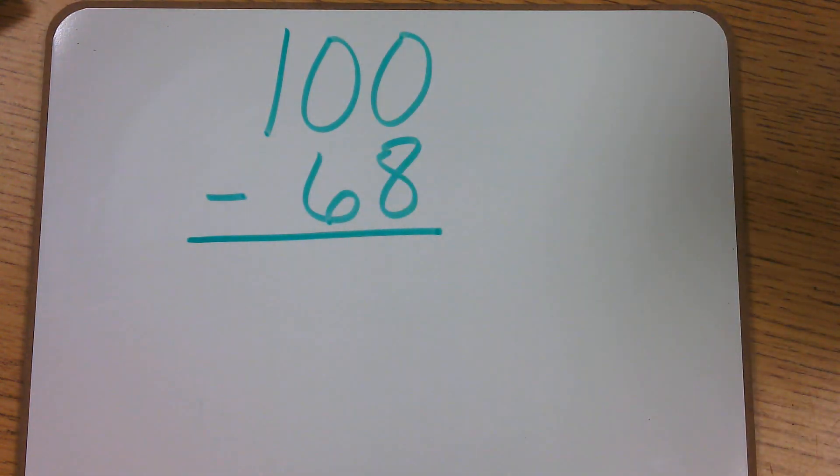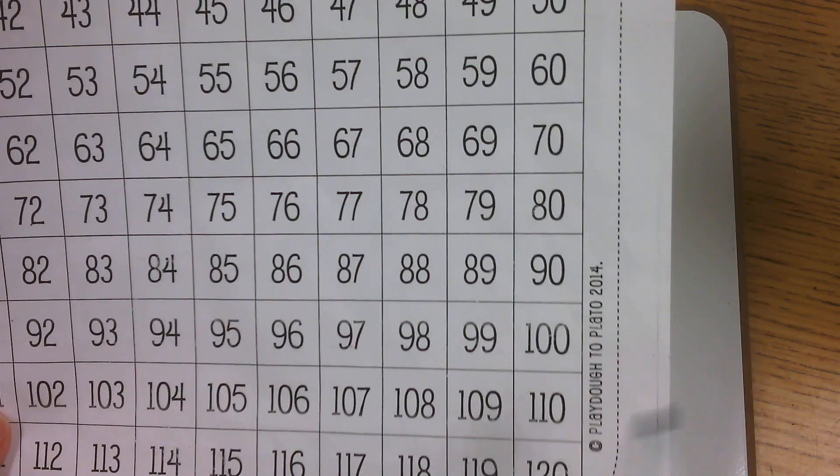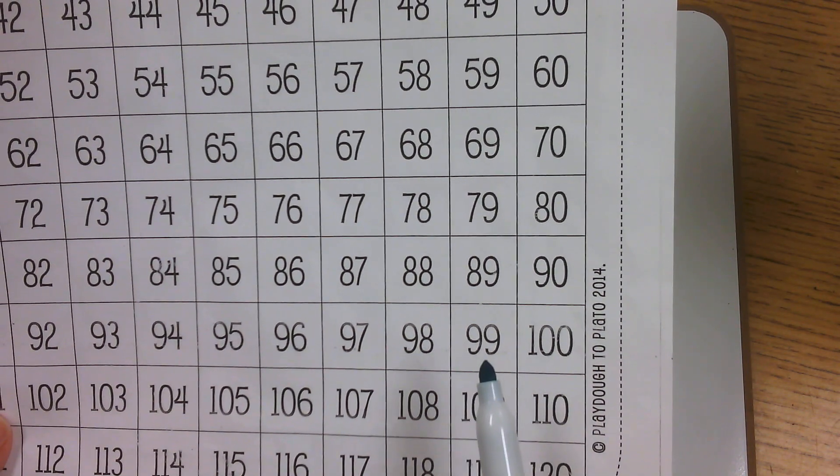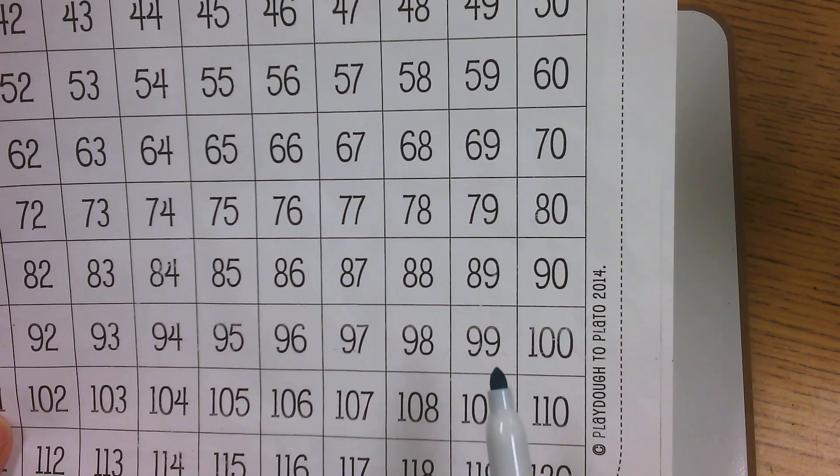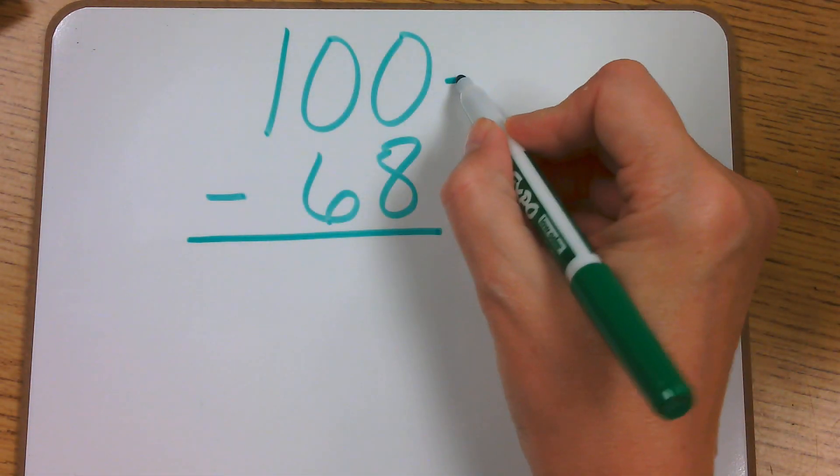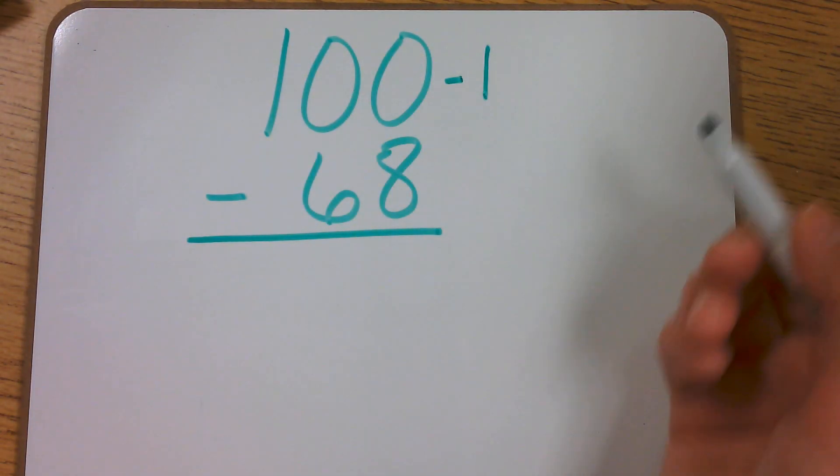As we know 100, if we look at a number chart, and we want to take away 1 from 100, it's the number that comes before 100, which is 99. So what I'm going to do is I'm going to take 1 away from the 100 and make it 99.